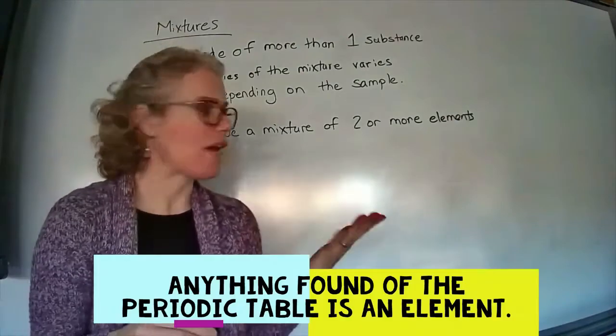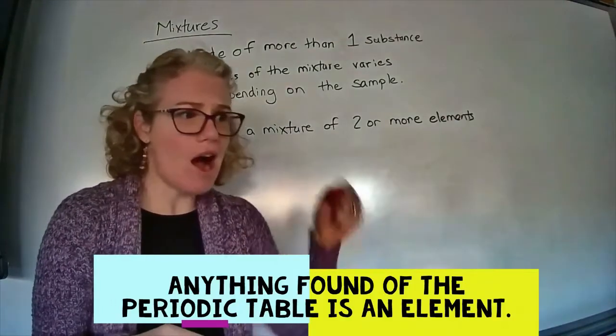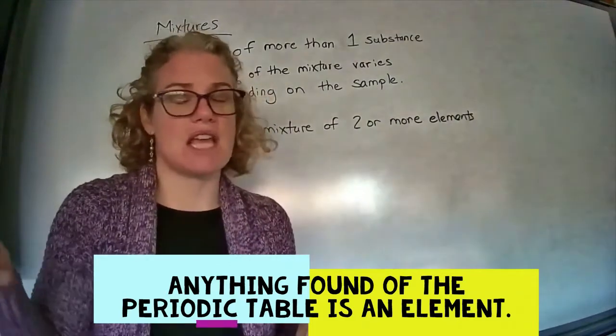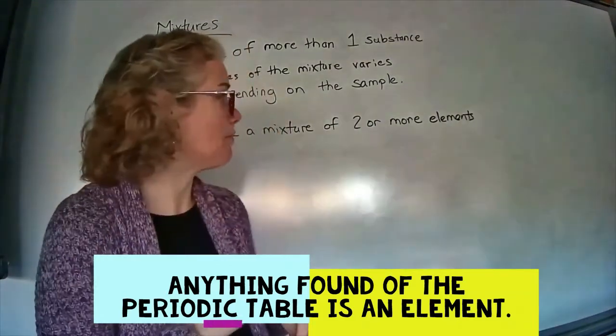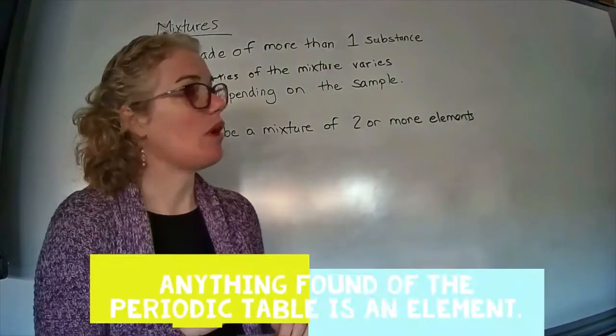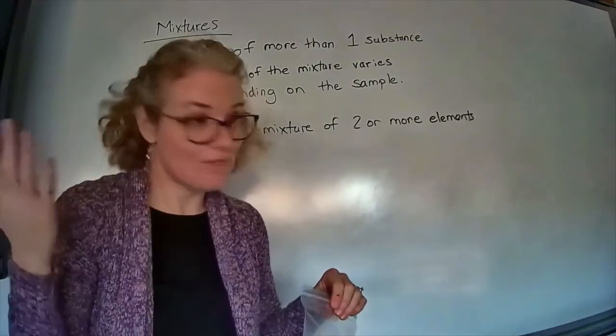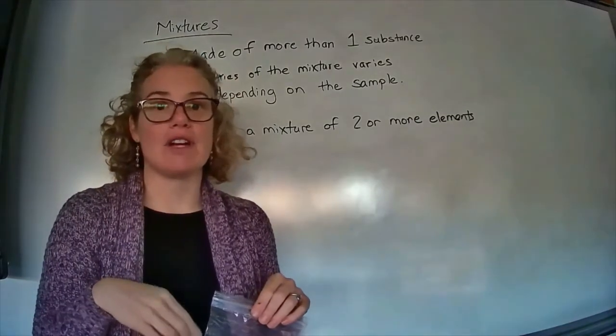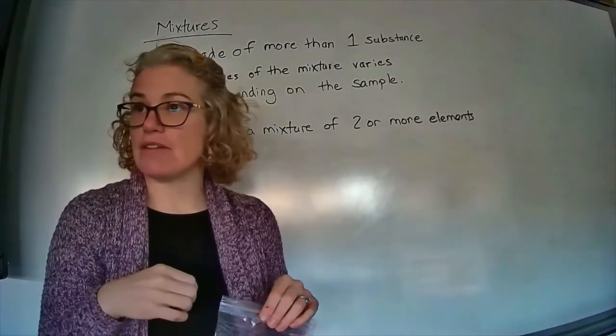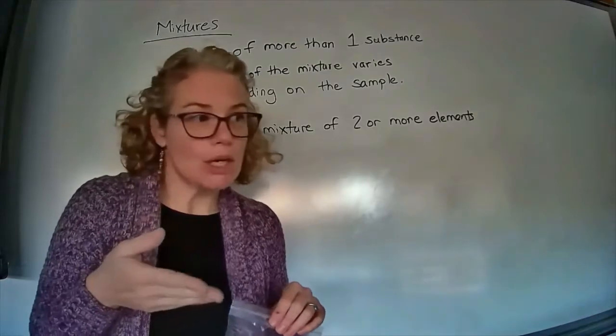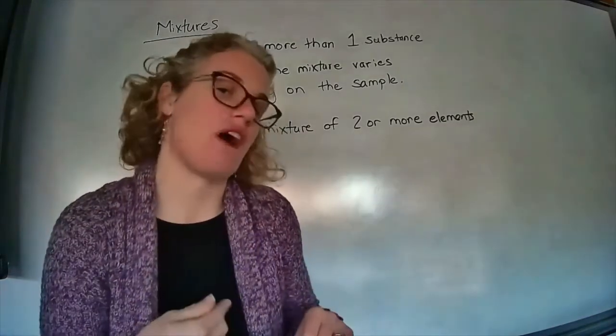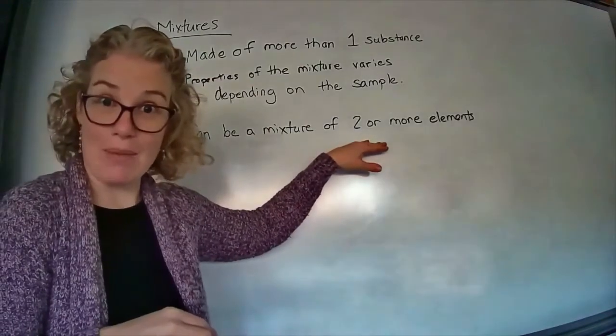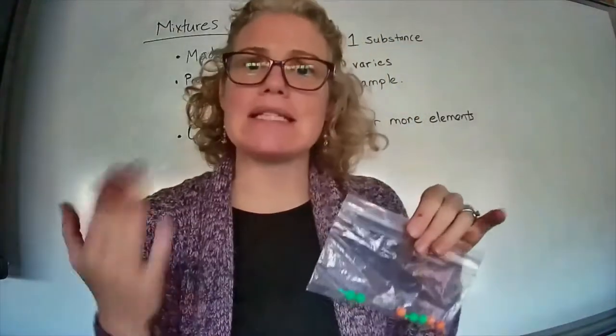So that could be like I've got iron filings, like little pieces of iron, mixed in with some oxygen gas. That would be a mixture. Or we could have little pieces of copper shavings mixed in with iron, and that would also count as a mixture of two or more elements. But what's key here is that these elements are not chemically combined.